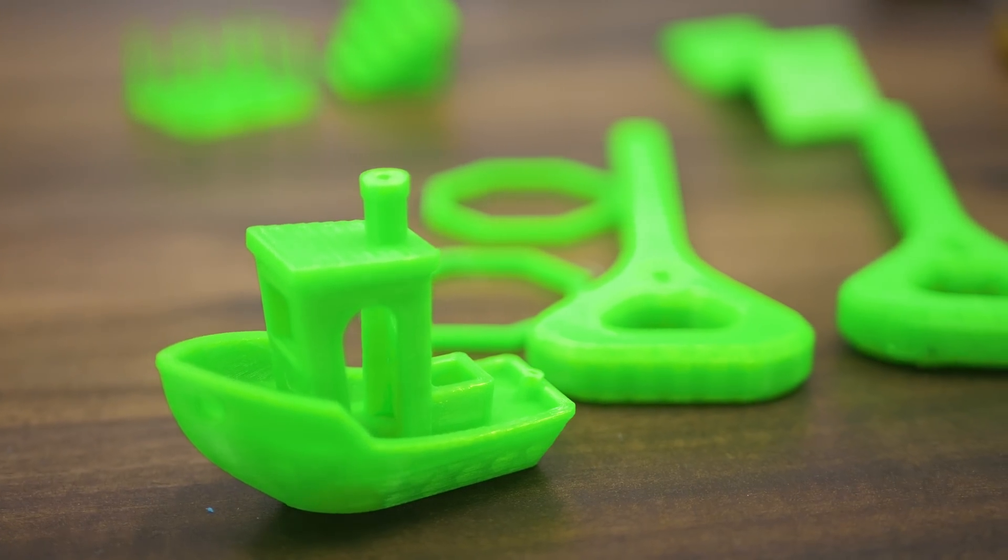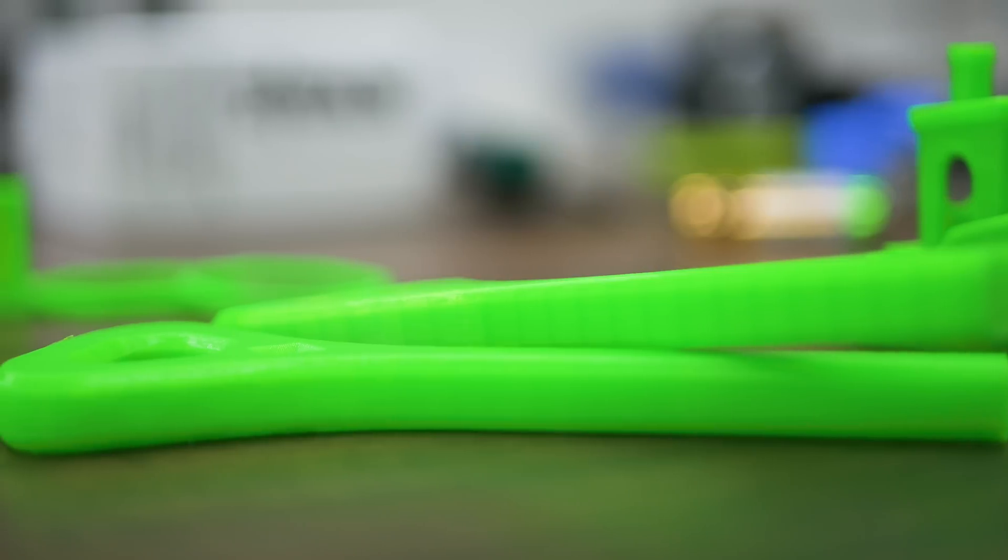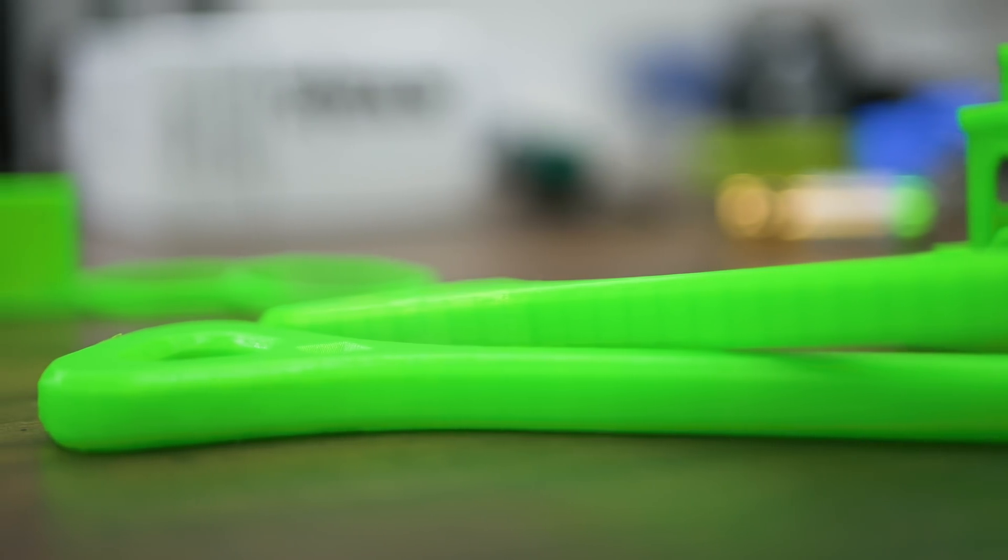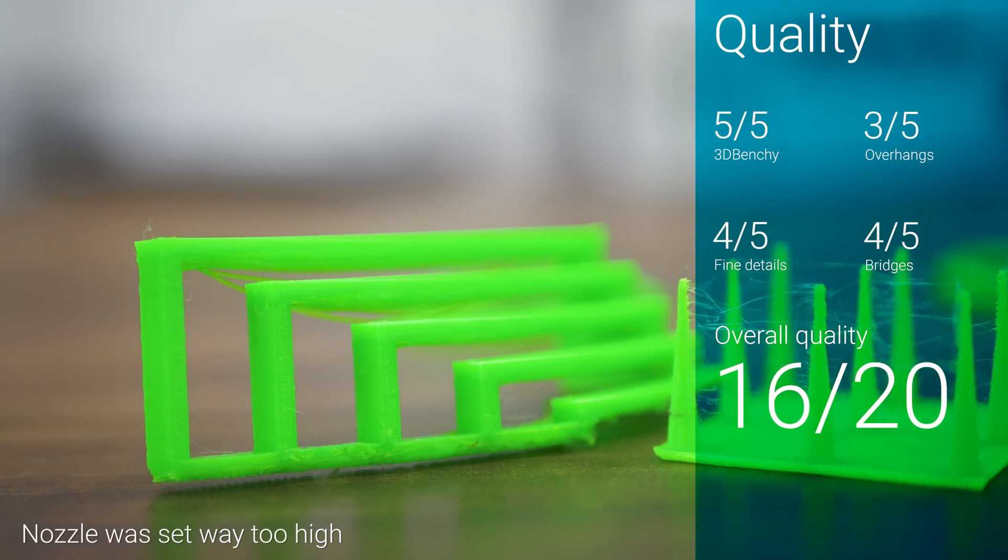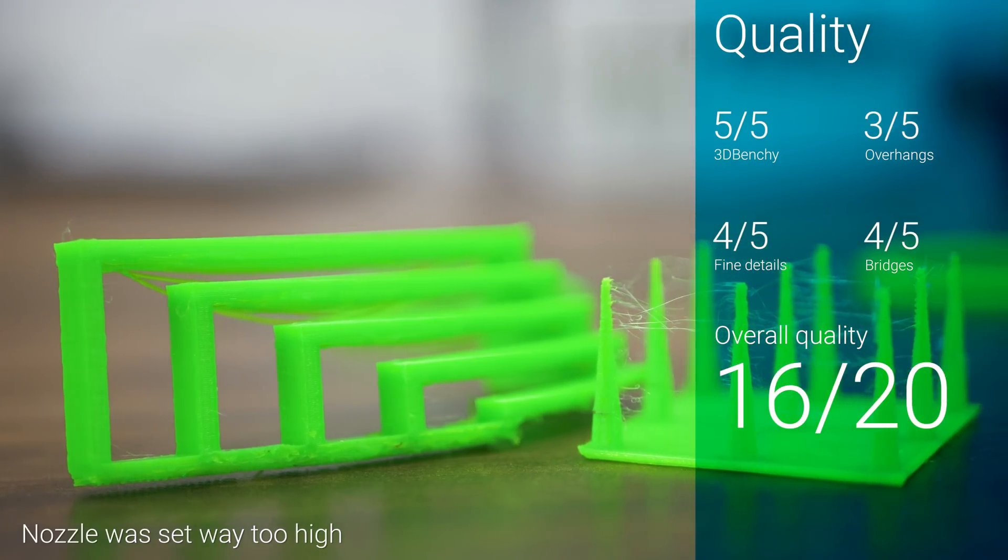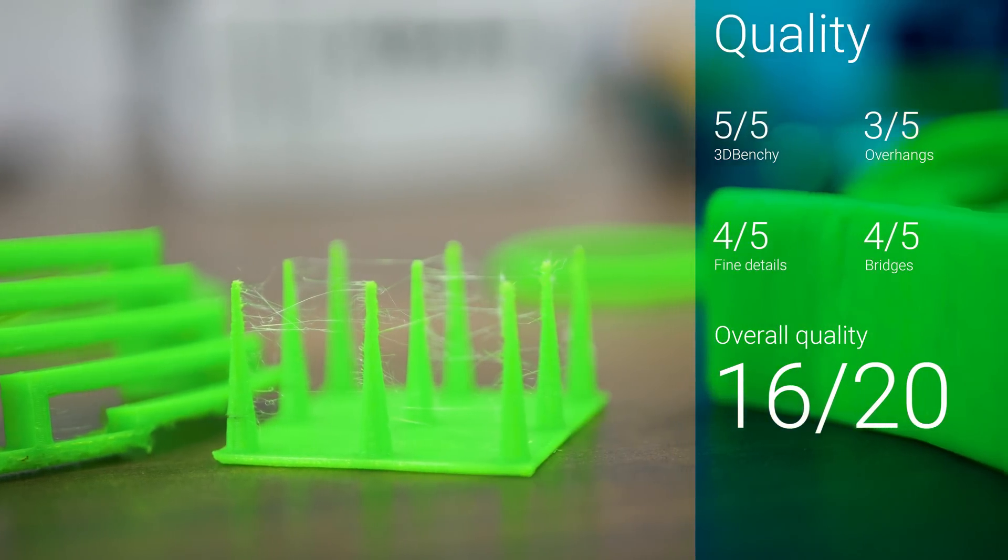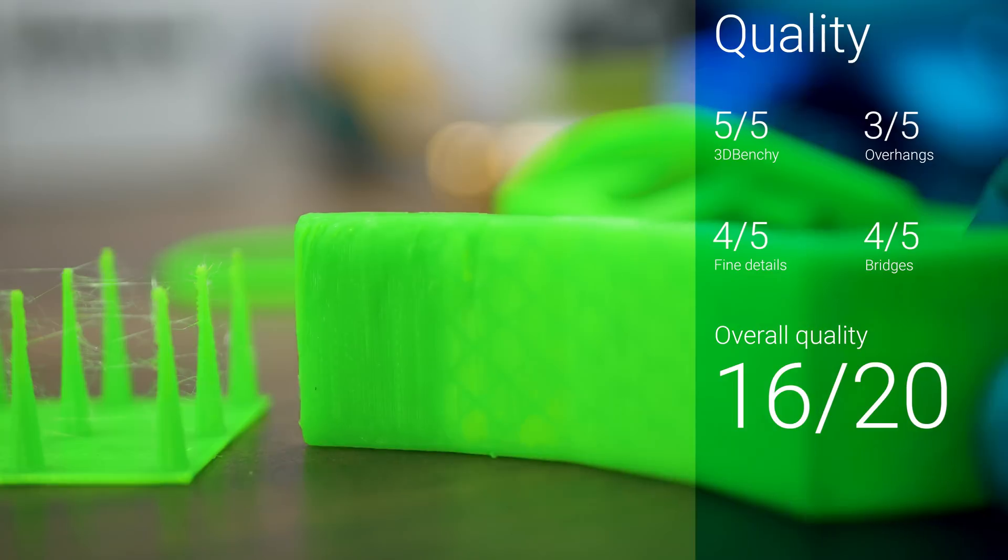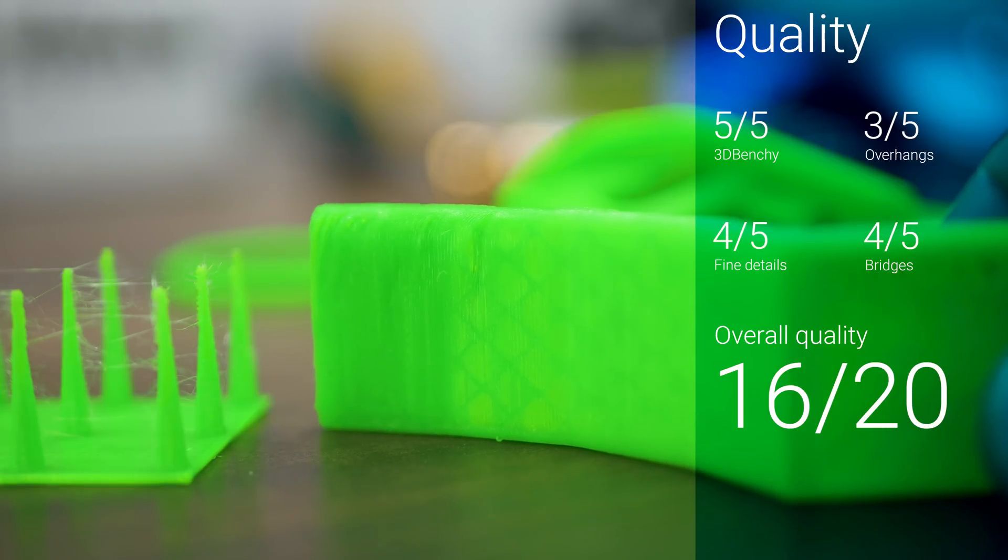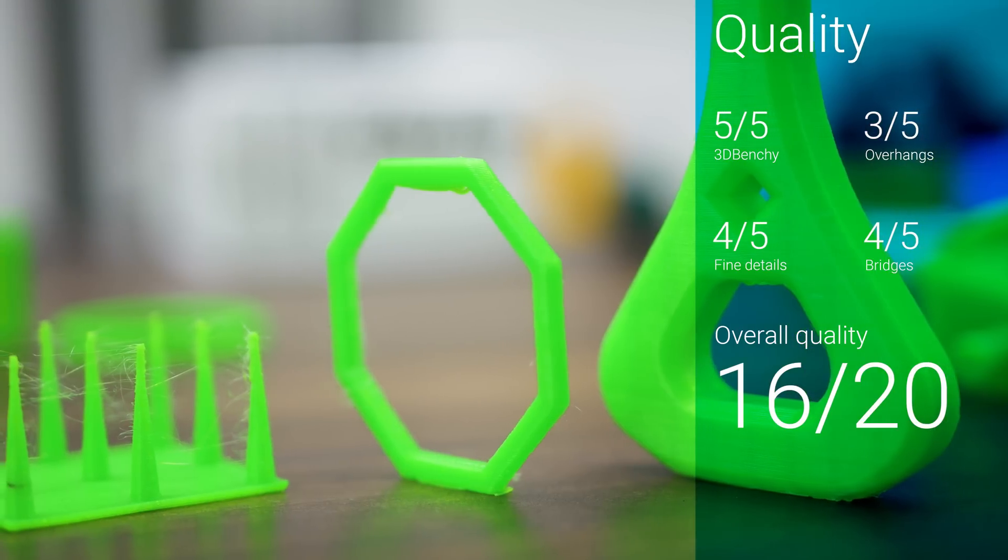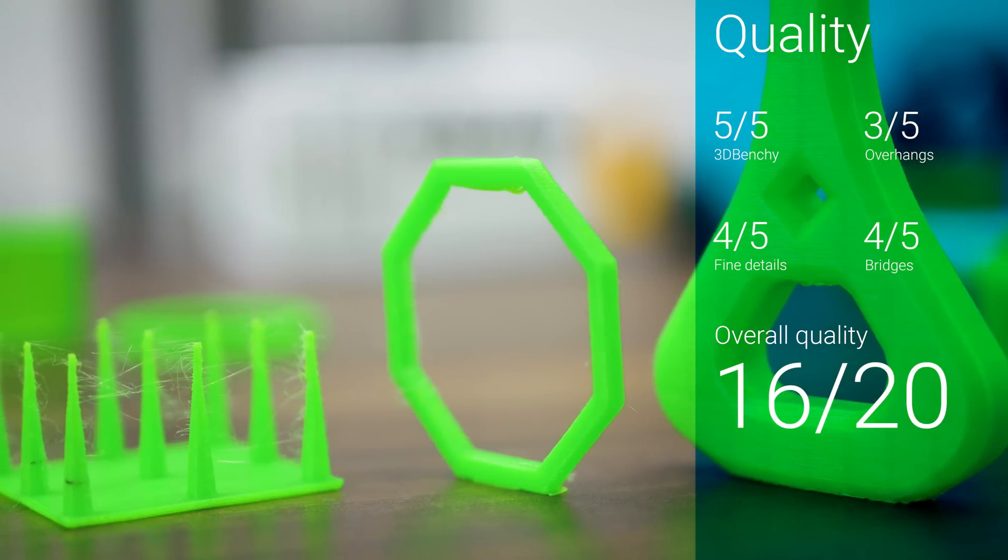As usual, I also use the part cooling fan at a fixed 20%. Print quality is practically identical to other copolyesters, with perfect bridging on all steps except the longest one, a fairly low tendency of stringing, and overhangs that all print but like to curl up on themselves on the more extreme angles. This makes for an overall respectable quality score of 16 out of 20.